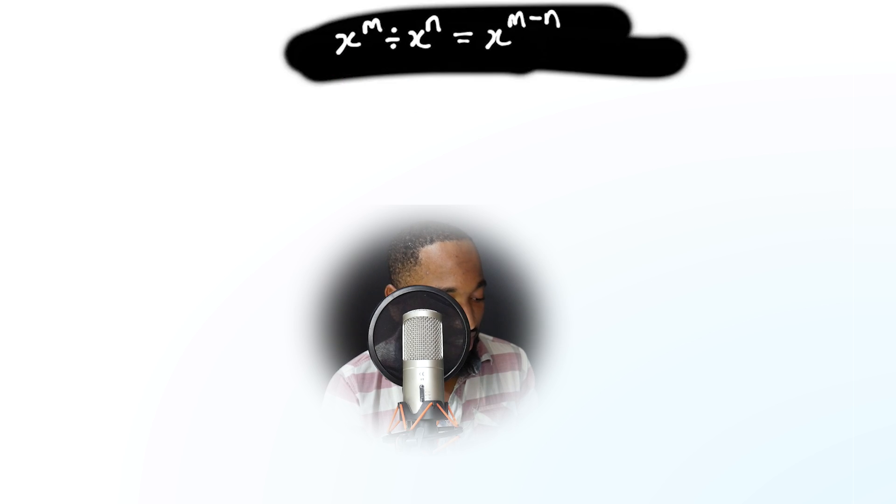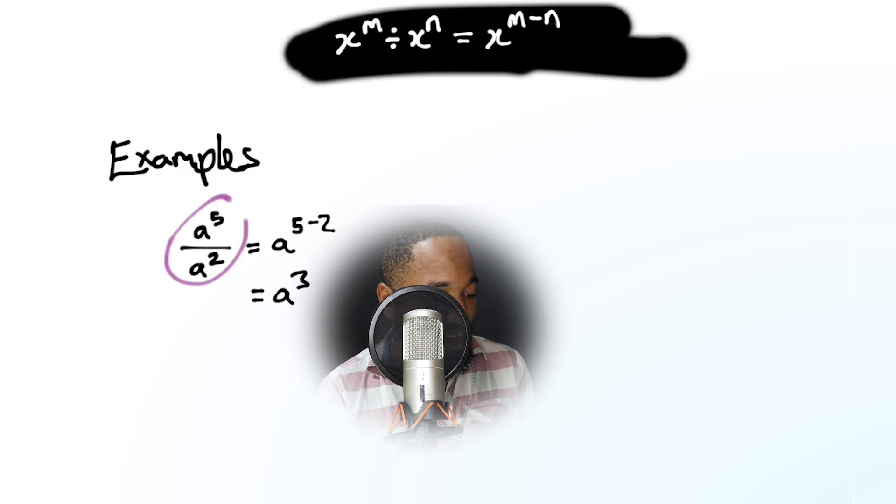The second law says that if it's a division sign, remember the bases must be the same, x here and x there, but if it's a division sign and we have m and n, then we will subtract. So in this example we have a to the power of 5 over a squared, subtract, get your answer, nice and straightforward.